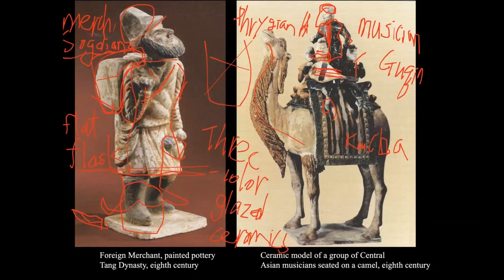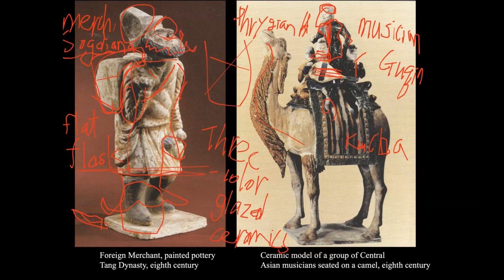He has a big nose, sunken eyes, and a lot of hair. He belongs to the Turkish ethnic group. That was the idea of how Central Asian merchants were depicted in Tang Dynasty Chinese pottery.